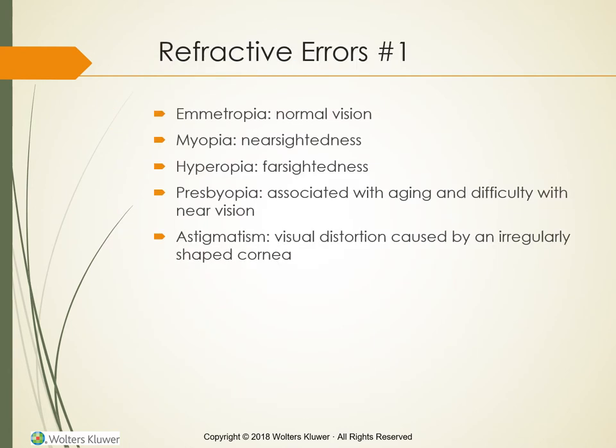One in three Americans have some form of vision-impairing eye disease by 65 years of age. More than 21 million people in the U.S. have some degree of visual impairment, including more than 1 million who are legally blind. Legal blindness refers to a vision loss level defined to qualify individuals for specific benefits such as social security disability benefits. Generally, this means the client's better eye has a visual acuity of 20 over 200 or less with the best possible correction.